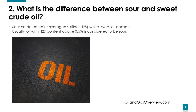What's the difference between sour and sweet crude oil? Sour crude contains hydrogen sulfide, or H2S, while sweet oil doesn't. Usually oil with H2S content over 0.5% is considered to be sour.